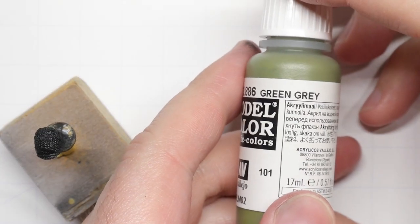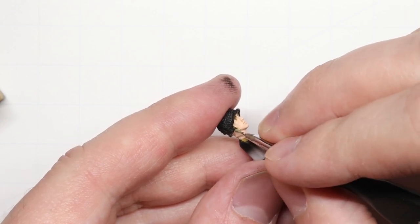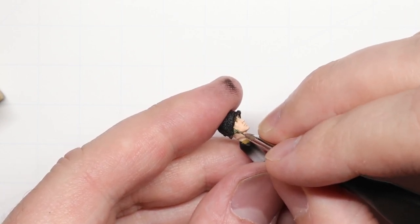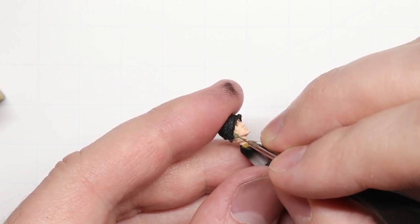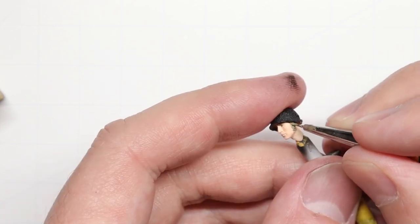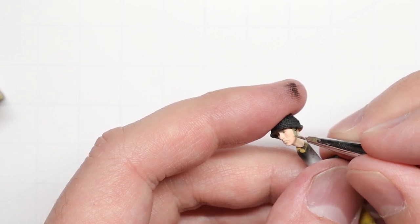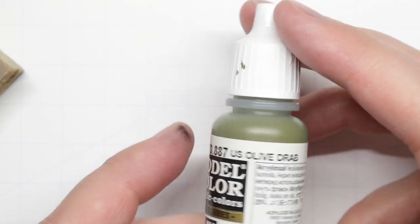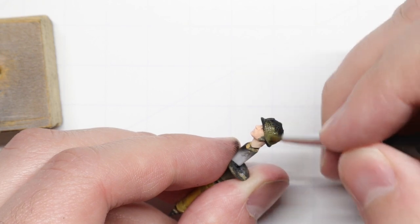We're going to grab our green gray after that, and we're going to paint up the jump straps on our Trooper's helmet. Once that's complete, we're going to switch to US Olive Drab and paint up the main part of the helmet itself. Make sure to get the underside of the rim as well, especially if you've overpainted any of the skin tone.